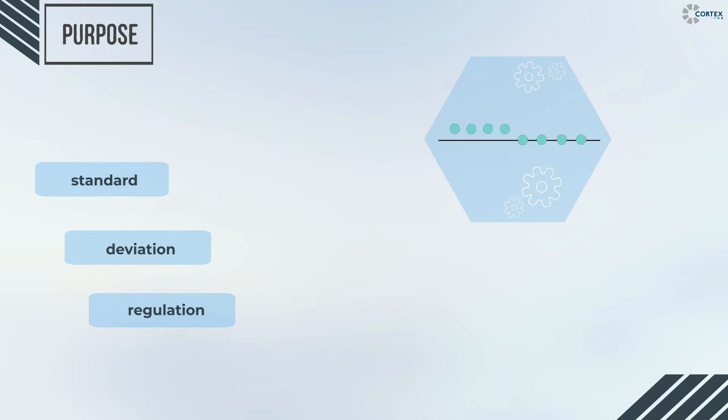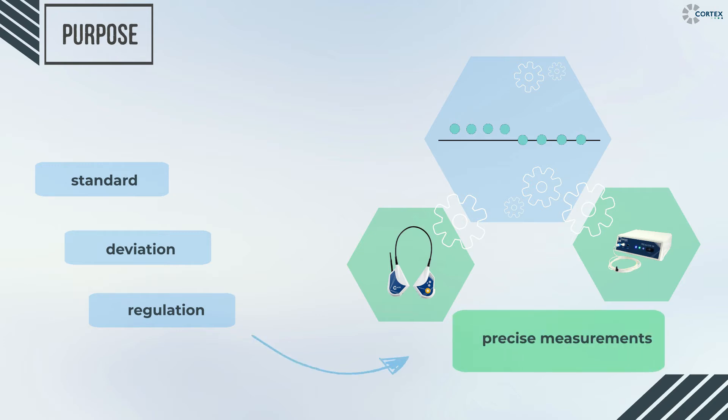Periodically, we have to perform calibration so we can expose the sensors to a known concentration gas in order to adjust and correct any drifts of the values, ensuring this way precise measurements.